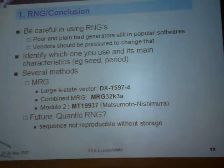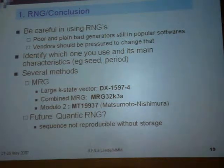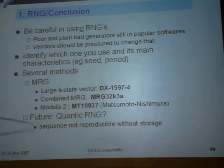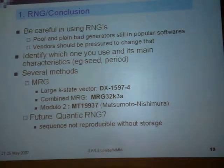Now for the future: some people say that the future is a quantum random number generator. It's a truly random process to generate randomness. The problem with quantum is that you cannot reproduce a sequence without storage. So if you want to reproduce a computation completely, you have to store all your sequence, and it could be a very long sequence.